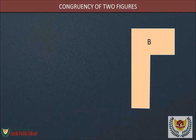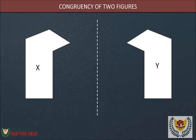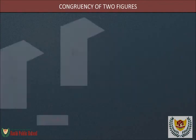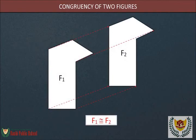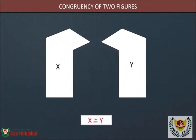Figures X and Y are congruent as figure Y is the image of figure X. Two figures are congruent if one figure lies exactly over the other after a combination of translations, rotations, and reflections. The symbol is used to indicate congruence. Thus, F1 is congruent to F2, A is congruent to B, and X is congruent to Y.